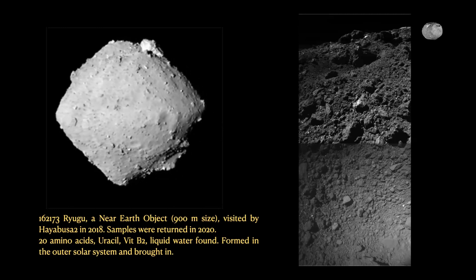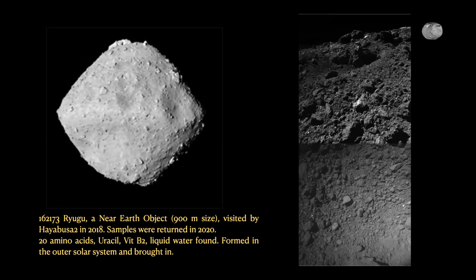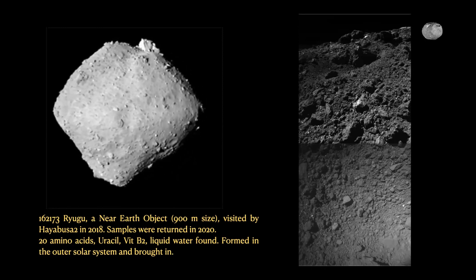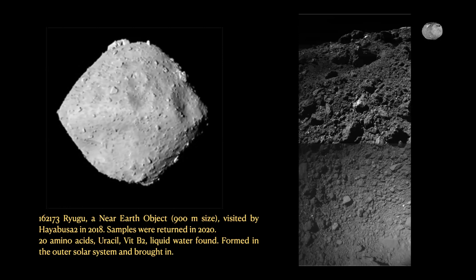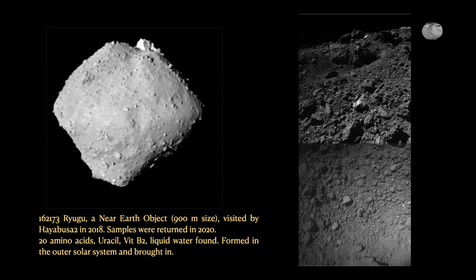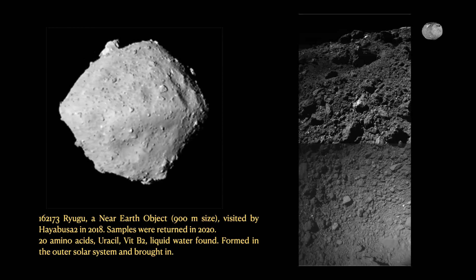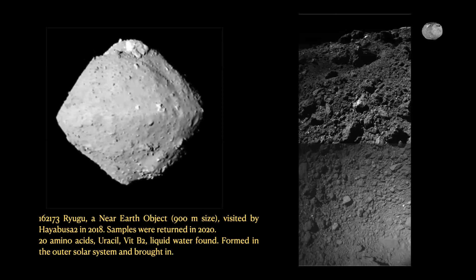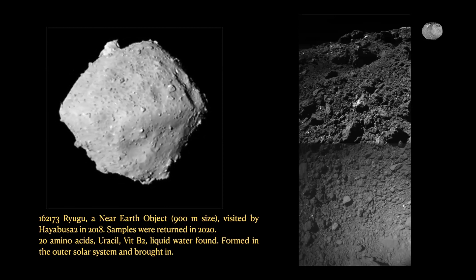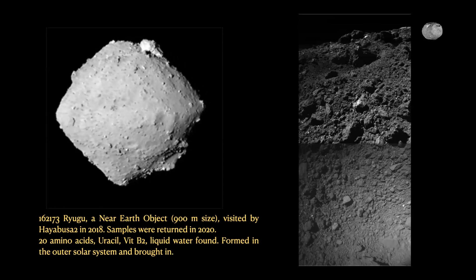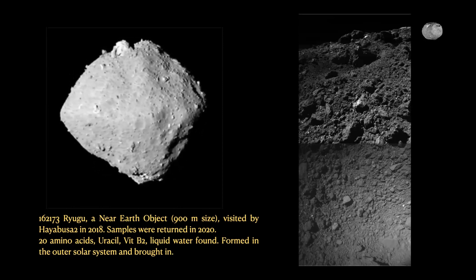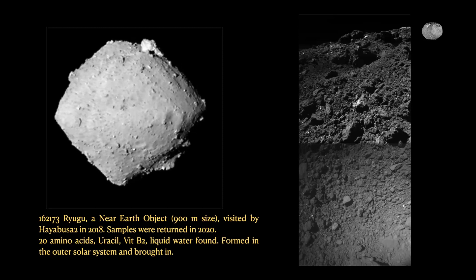Liquid water found means that life could in principle exist — it has amino acids, who knows? But life cannot be oxygen or carbon dioxide-dependent since there's clearly no atmosphere. A different kind of life could evolve. There is no evidence for life on any asteroid, but the chemistry is such that we can't rule it out somewhere. Because of the complicated chemistry on the surface, a lot of complex molecules are formed.